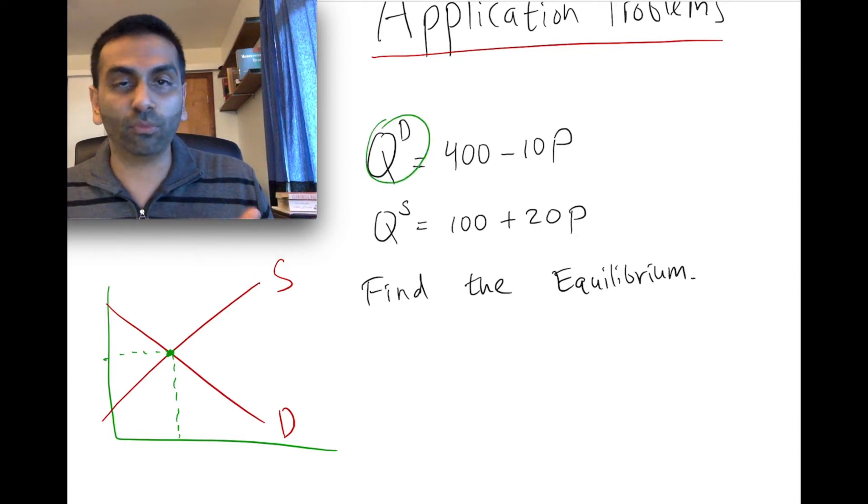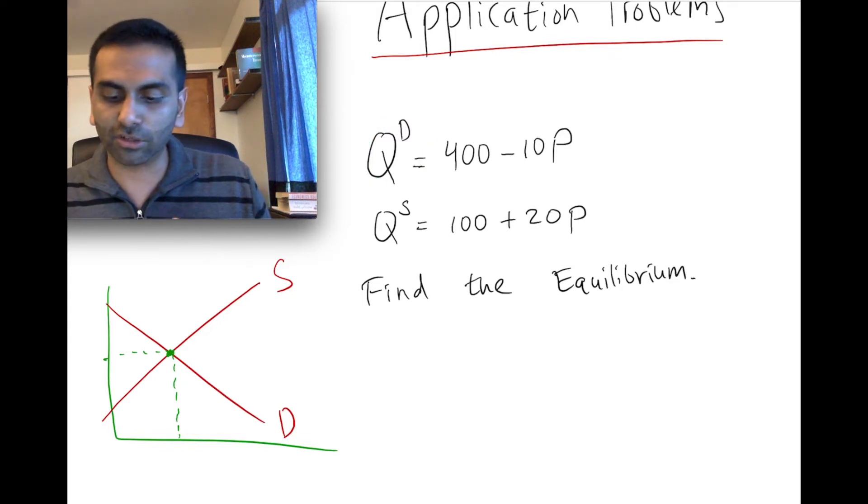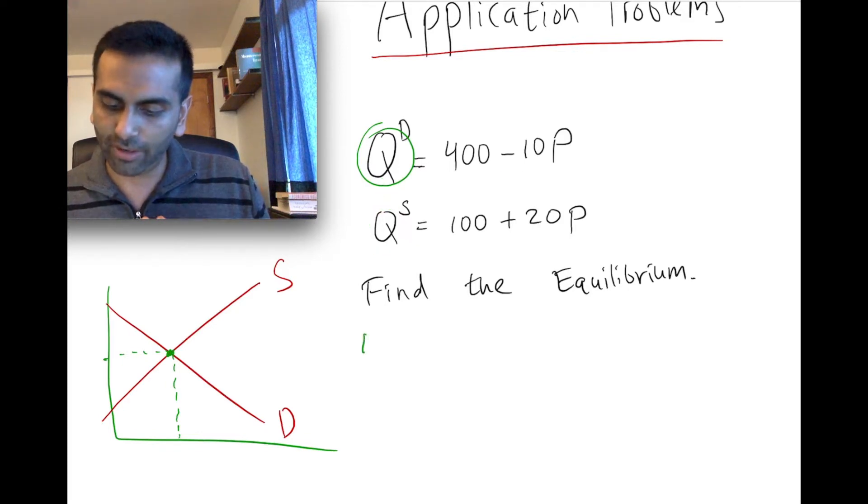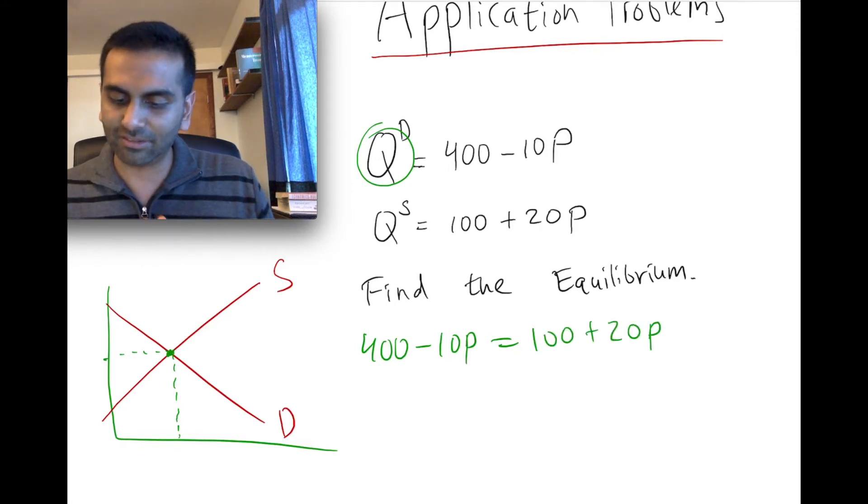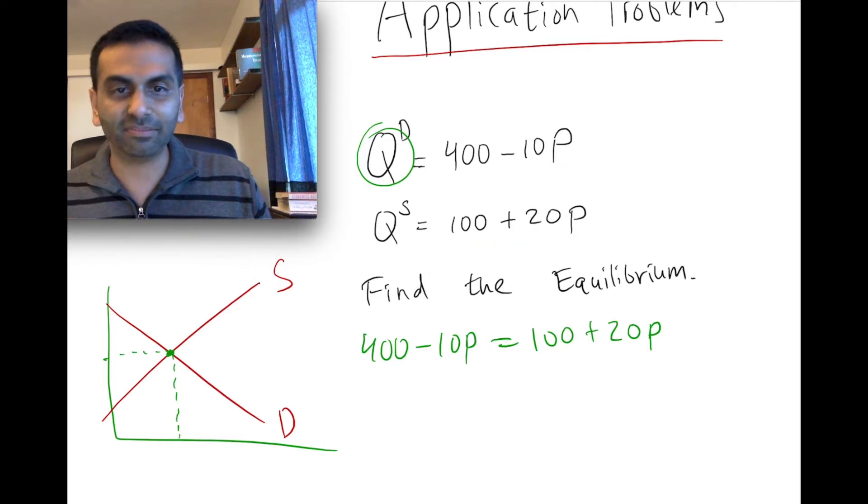You substitute one into the other. Now here, since they're both in q equals format, the substitution is going to look really easy, because we've already solved for one variable. So when we substitute, we're going to replace this q with what q is, which is 400 minus 10p. So we're just going to write 400 minus 10p equals 100 plus 20p. So we're basically just setting this quantity equal to this quantity, and we're asking which price makes that happen.